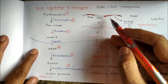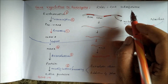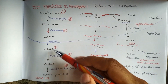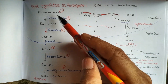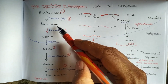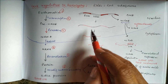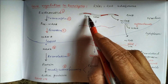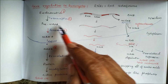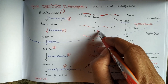Gene regulation in eukaryotes mainly occurs by RNA interference. Transcription of euchromatin — the non-condensed form of the DNA — produces the precursor of messenger RNA, which contains both exons (the coding part) and introns (the non-coding part). The pre-mRNA then undergoes splicing where the non-coding introns are removed to produce the mature messenger RNA.